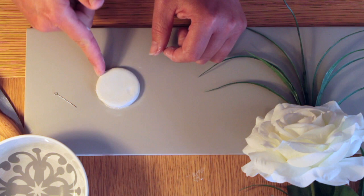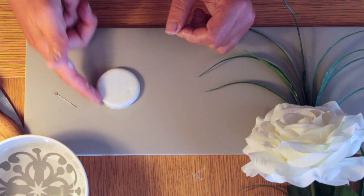I'm simply just smoothing it out a little with my finger with a little bit of water on, just to make it a really nice smooth disc.